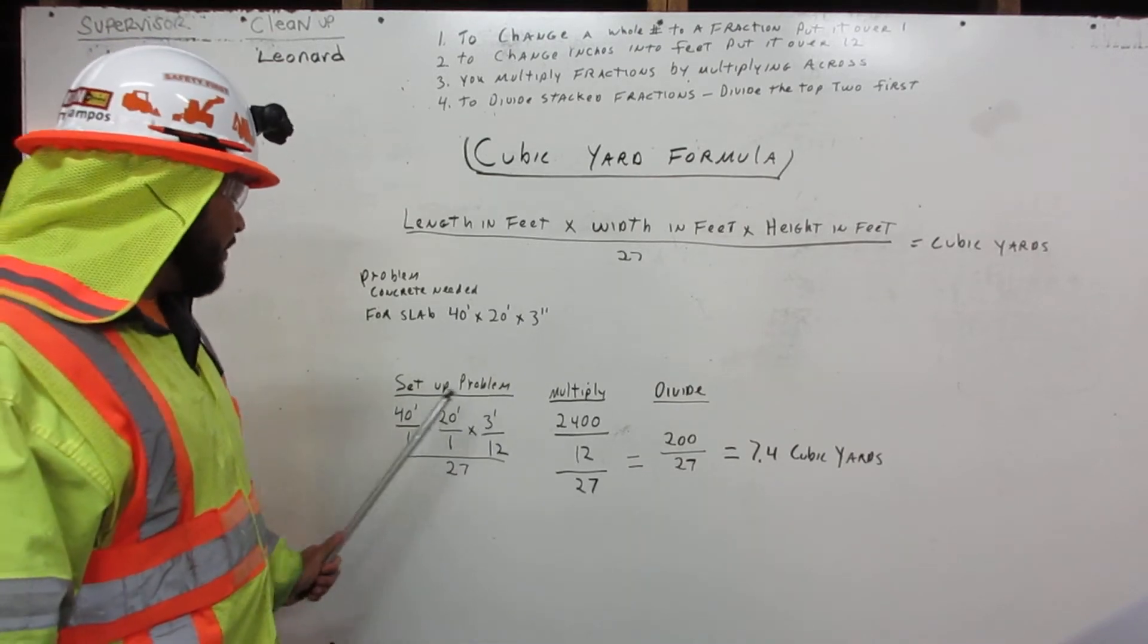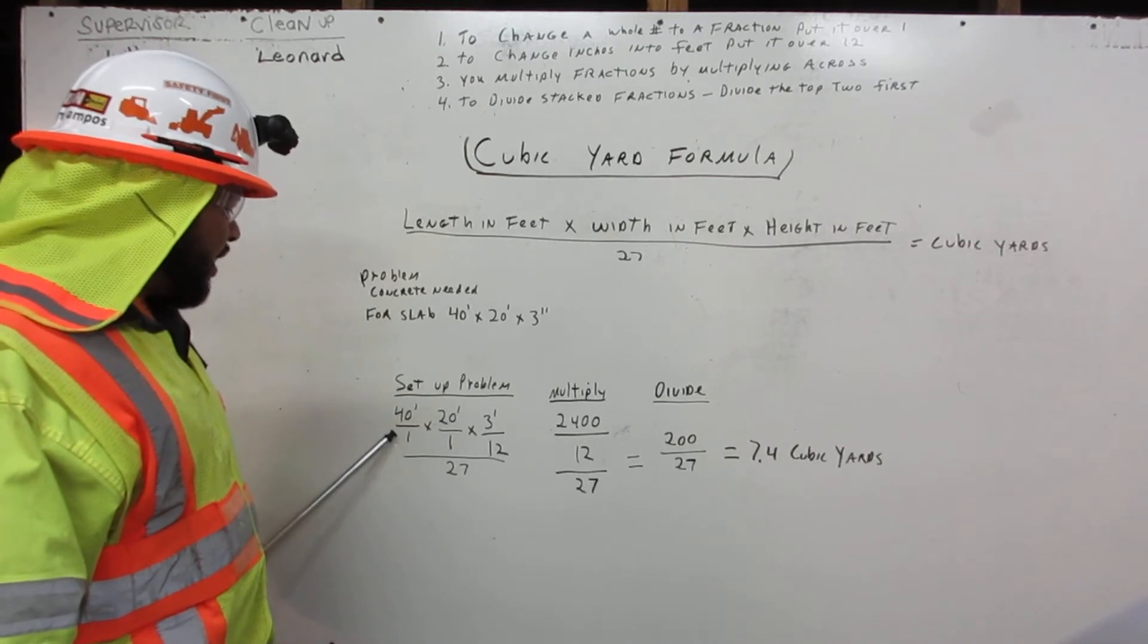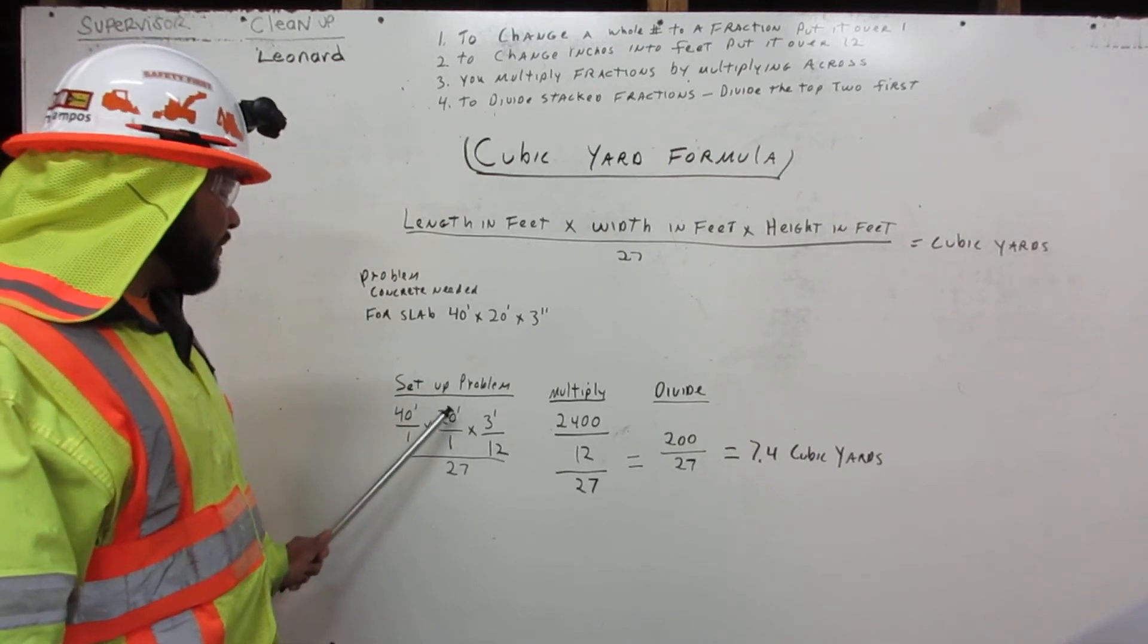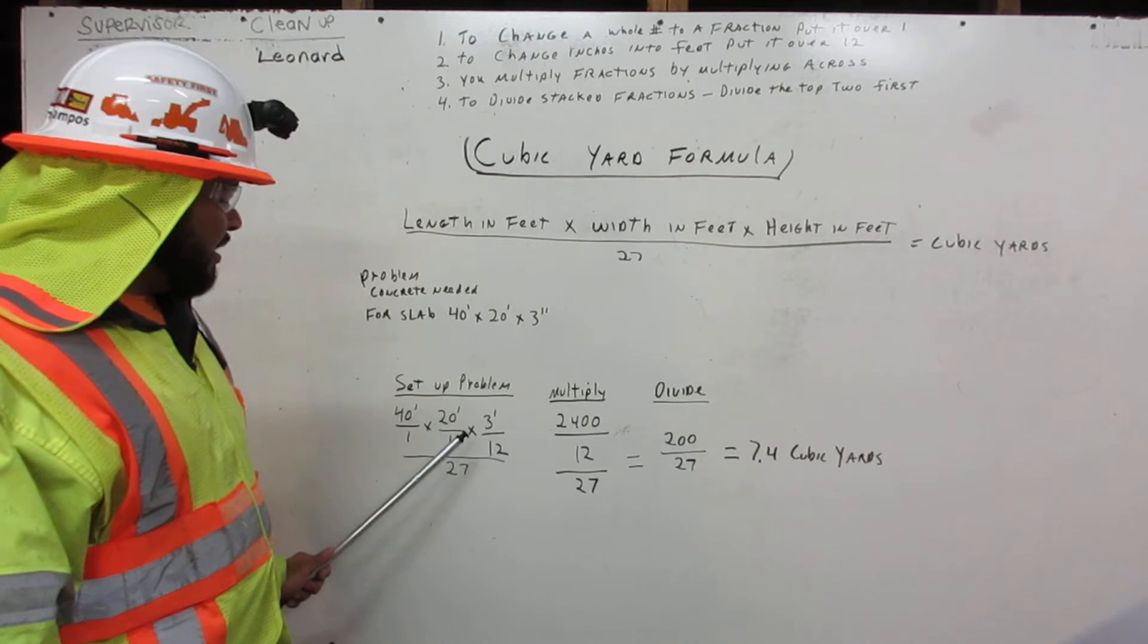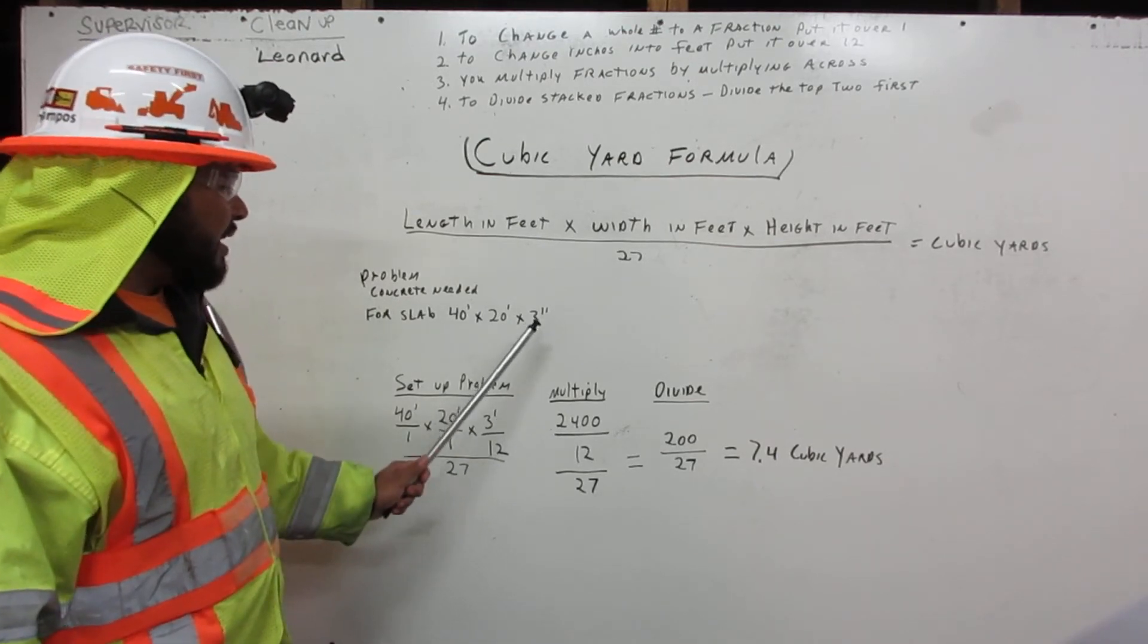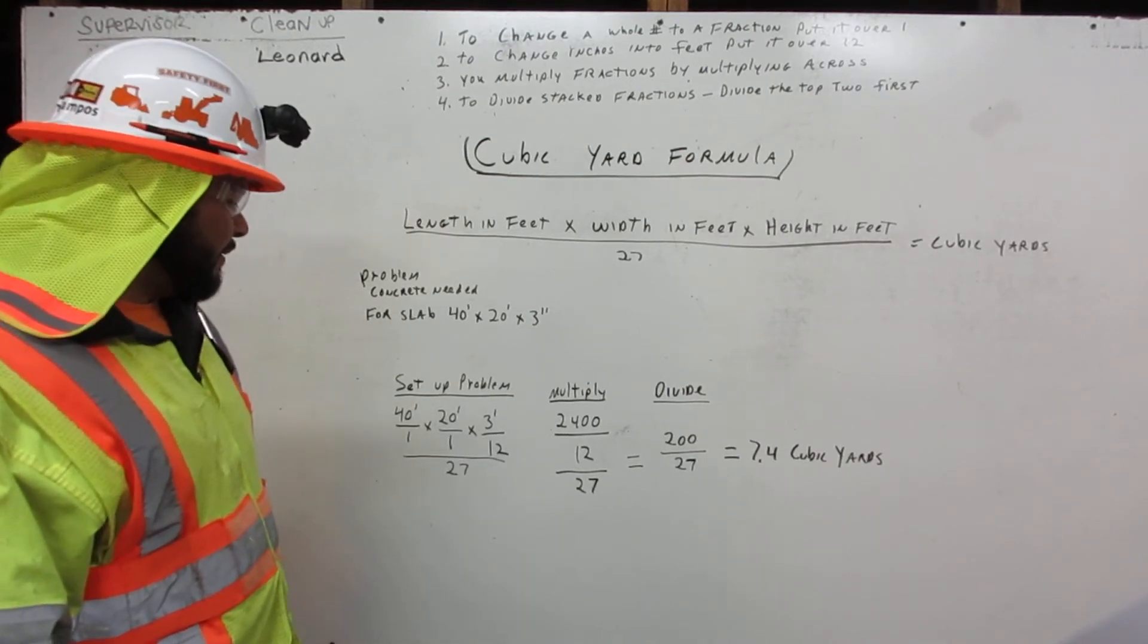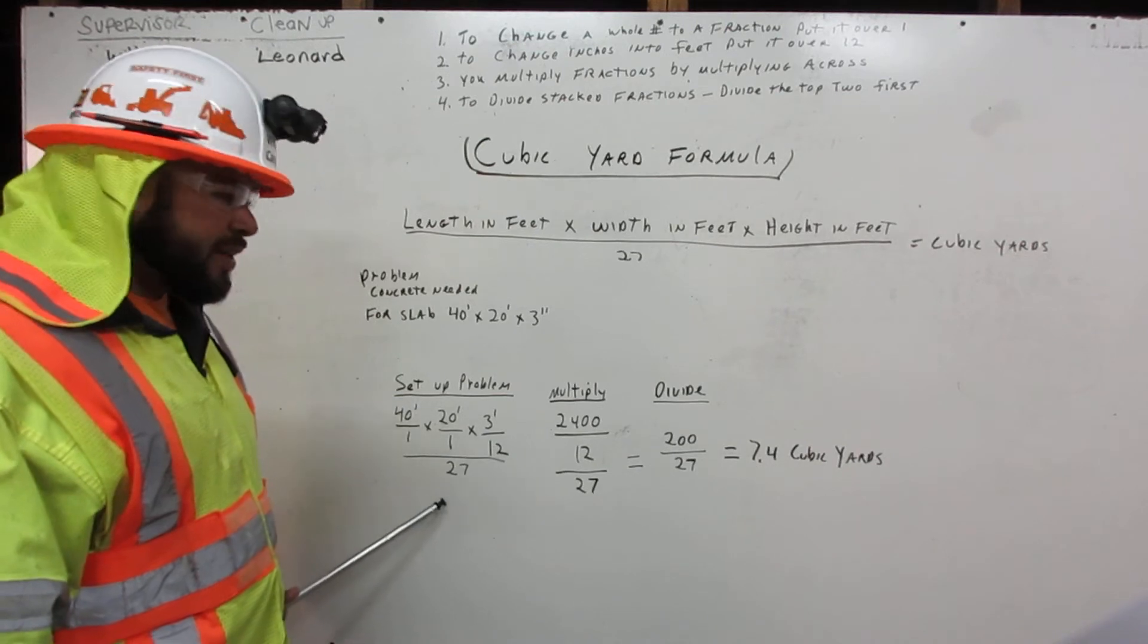We set up the problem: 40 feet over 1 times 20 feet over 1 times 3 over 12. Now we change the inches into feet by putting it over 12, over 27.